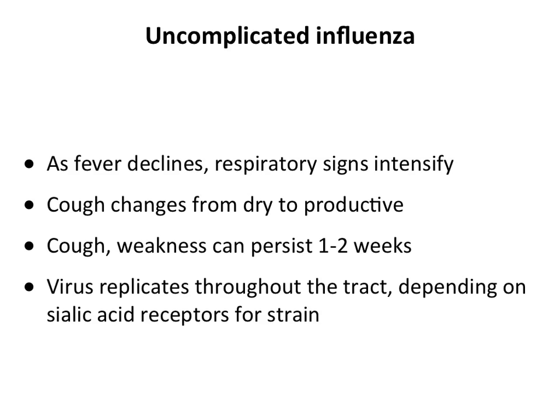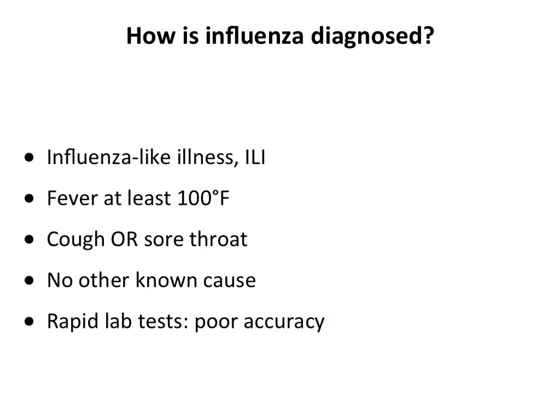The virus replicates throughout the upper and lower respiratory tract because receptors — alpha-2,6-linked sialic acids — are present throughout. Avian strains use a different receptor: alpha-2,3-linked sialic acids. We'll talk about the consequences of that later. Influenza is one of the few respiratory illnesses we try to diagnose because we do have antivirals. In flu season, a physician will often prescribe Tamiflu based on flu-like symptoms alone, without a lab test, since there's roughly a 50% probability you have flu.